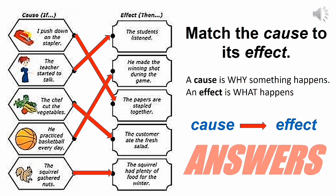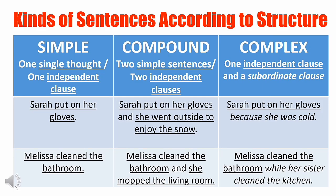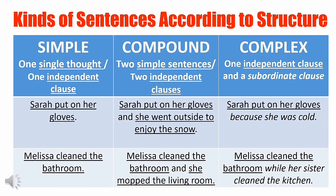Do we have the same answers? Before we proceed, let us review the kinds of sentences according to structure. We have here simple sentence, compound sentence, and complex sentence. A simple sentence has one single thought or one independent clause. A compound sentence has two simple sentences or two independent clauses. While a complex sentence has one independent clause and a subordinate clause. Here are some examples.